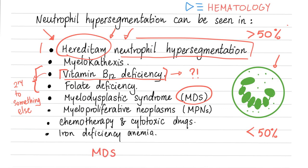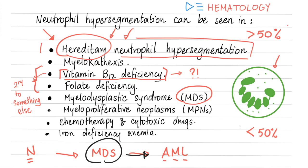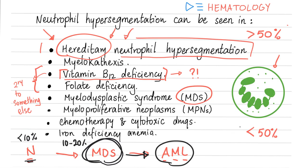In brief, MDS is an intermediate stage between normal and AML — acute myeloid leukemia — so there is a risk of malignant transformation from MDS into AML. If you are normal, blasts in the peripheral smear should be less than 10%. In MDS, usually 10–20% blasts in the peripheral smear. In AML, usually more than 20% blasts in the peripheral blood smear.